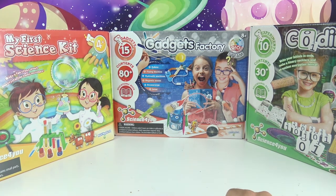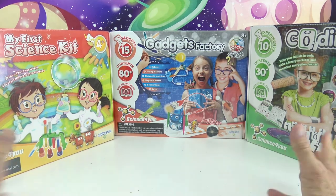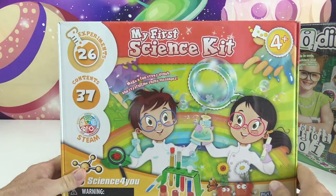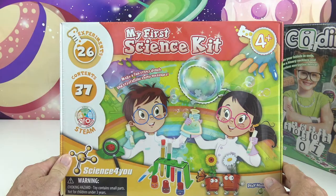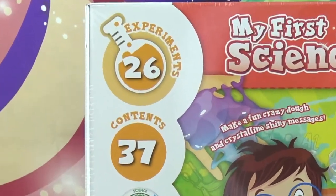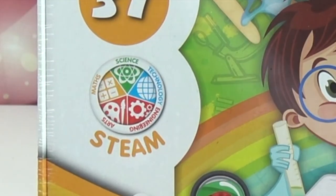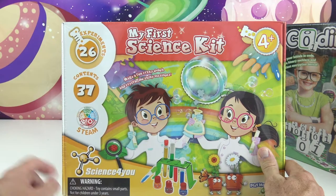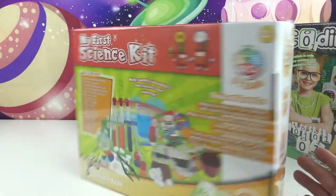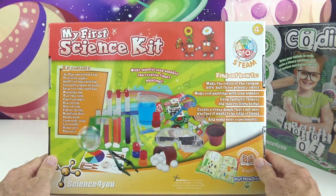And we have these super cool experiment science kits. First we have this one here. This one's called My First Science Kit. And this has 26 experiments with 37 contents and it's STEAM: science, technology, engineering, arts, and math. Wow! Let's look at the back and look at all that fun stuff they have in there.